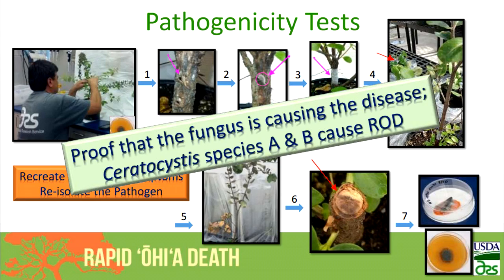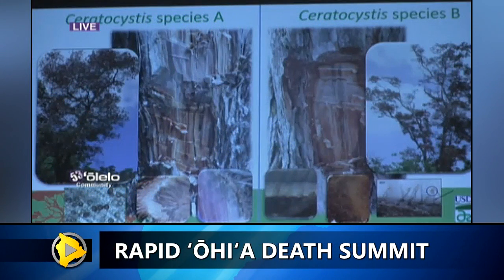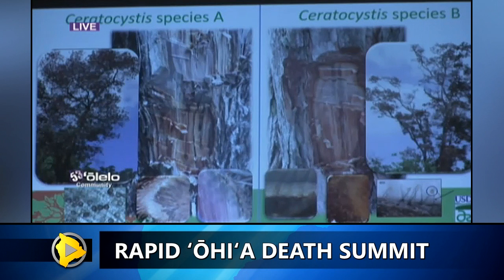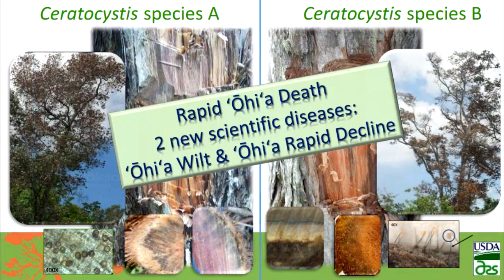As time goes on and you do more investigation in the field, you're trying to get a better handle on the symptoms. With these two species, you ultimately see dead canopies of trees — they're very similar and hard to tell apart at that stage. But looking inside the wood, you can see the streaking pattern of one is a little darker. Pay attention to the types of spores: sometimes short-lived spores, other times environmentally resistant spores that can survive a couple of years after trees die. Species A is typical of what Ceratocystis wilt is in trees, while the other is more of a rapid or quick decline — different scientifically, but both under the umbrella of rapid Ohia death.